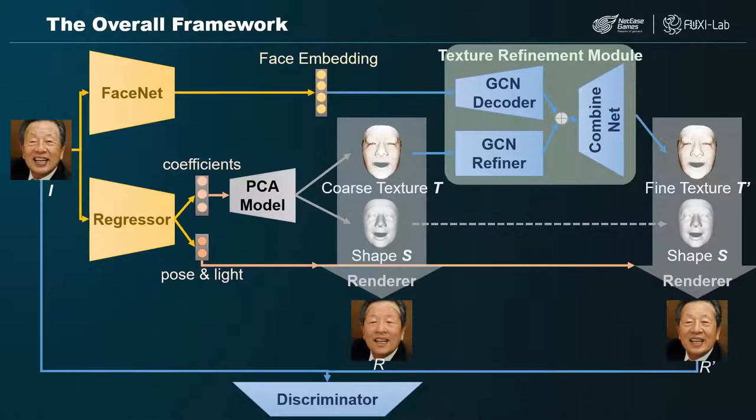Here is the overall coarse-to-fine framework of our approach. The yellow blocks are pre-trained before others, the grays are non-trainable, and the blues are trainable.